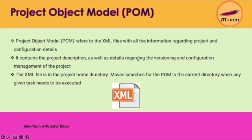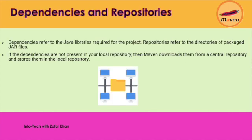The next concept is dependencies and repository. A dependency refers to the Java libraries required for a project — it's related to libraries or other files as well. A repository refers to directories of packaged Java files. If the dependencies are not present in your local repository, then Maven downloads them from the central repository and stores them in the local repository.